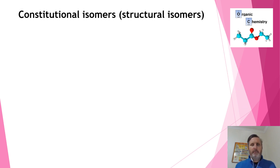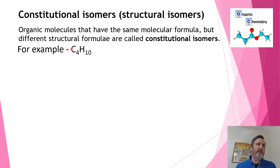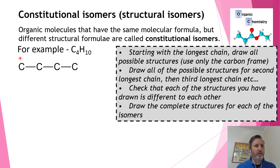Now let's look at some isomers commonly associated with alkanes, though they can occur with any molecules. These are called constitutional isomers or structural isomers. Every organic molecule has a molecular formula — for example, C4H10 means the molecule has four carbons and ten hydrogens. But this molecular formula doesn't tell us how the atoms are arranged. To find all distinct molecules with that formula, I start by drawing the longest chain: four carbons in a row with no branching.